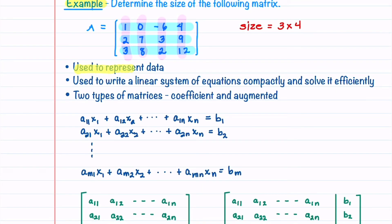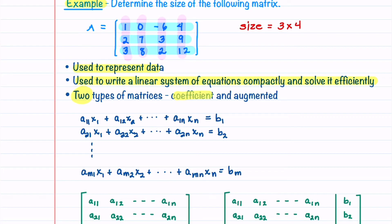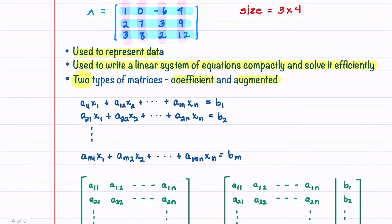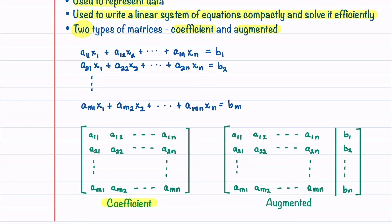Matrices are used to represent data and also to write linear systems compactly and solve them efficiently. When working with linear systems, there are two types of matrices: a coefficient matrix and an augmented matrix. The coefficient matrix contains the coefficients from the left side of the linear system. The augmented matrix contains coefficients from both the left and right sides — we often add a vertical line to remind us of the separation. If you're given a matrix without being told which type it is, assume it's a coefficient matrix.